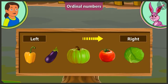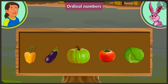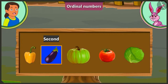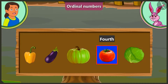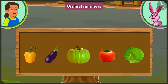Yes, but usually we count objects starting from the left. In that case, at the first position is capsicum, at the second position is brinjal, at the third position is pumpkin, and at the fourth position is tomato. Yes, now you are right!